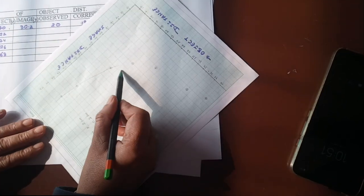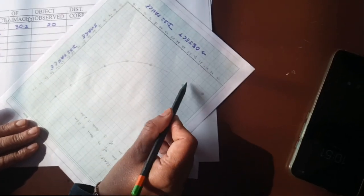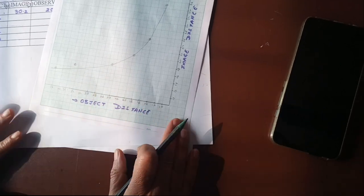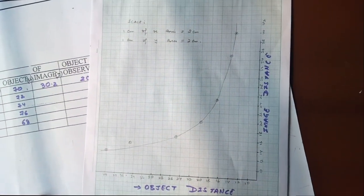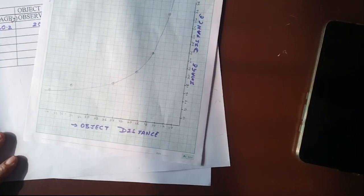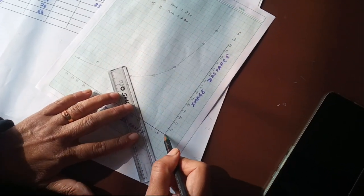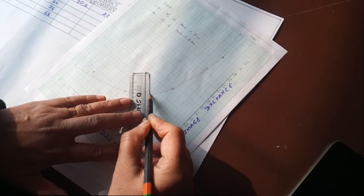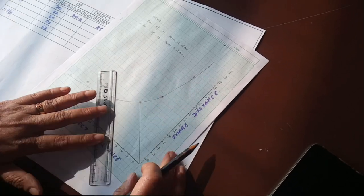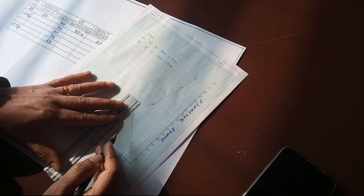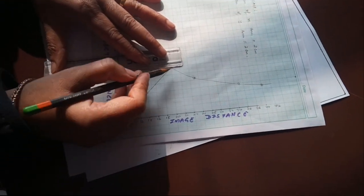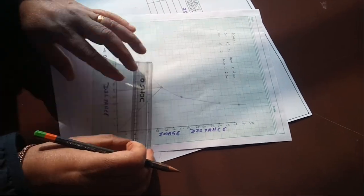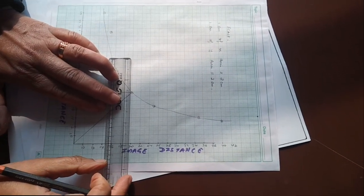I have already plotted the points — join them freehand. Some points may not fall exactly on the curve, that's acceptable. From the origin, draw a line and find the intercepts on the x-axis and y-axis. Drop a perpendicular from the curve to the x-axis and similarly to the y-axis.